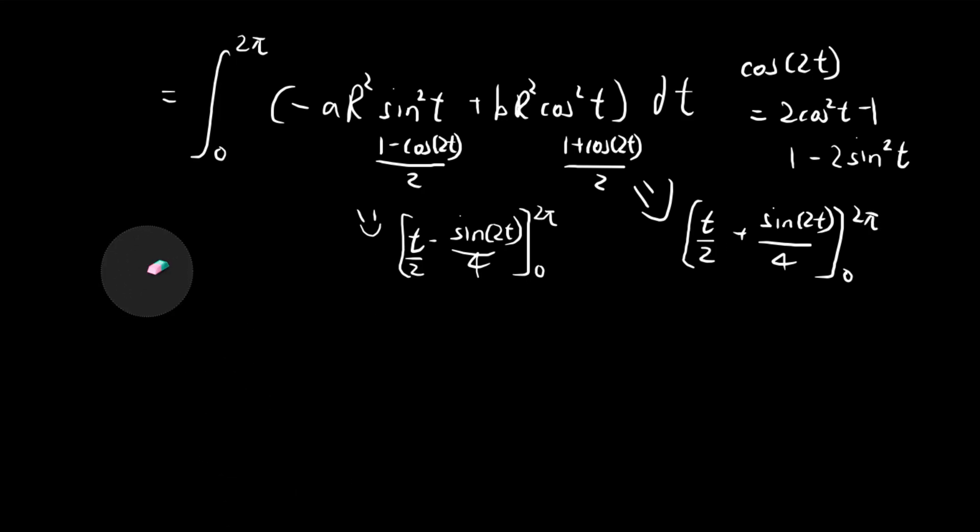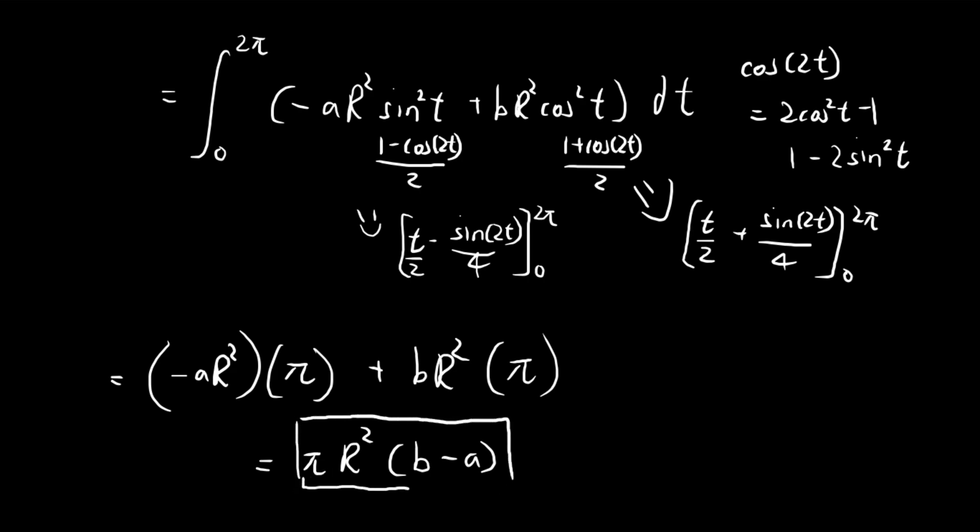As you know, if you substitute in 0 for everything, it's going to become 0. When you substitute in 2π, let's write the constants out first. You get 2π/2, so that's just π. You have sin 4π, which is just 0, so we can ignore that term. The same goes for this side. You substitute in 2π, you get 2π/2, that's just π. You get sin 4π, that's 0. For 0, everything is just 0, so everything goes away. In the end, you have πr²(b - a). This is what our line integral is going to evaluate to.